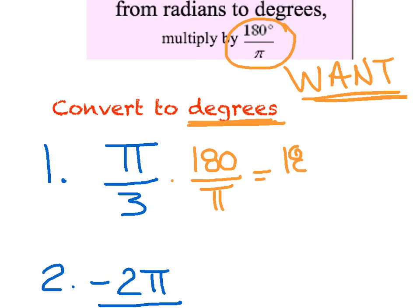And again, just multiply across the top. 180 pi over 3 pi. And then simplify. And a pi on top, pi on the bottom cancel. And 3 goes into 3 once and into 180 60 times. So I would say this is 60 degrees.